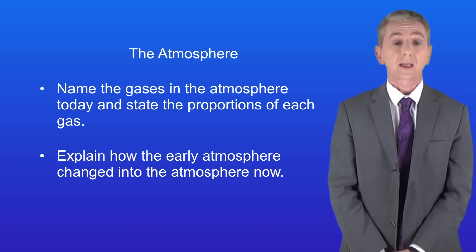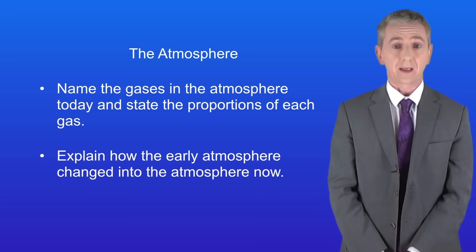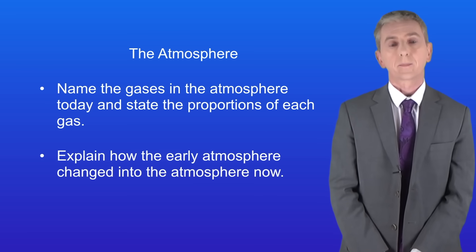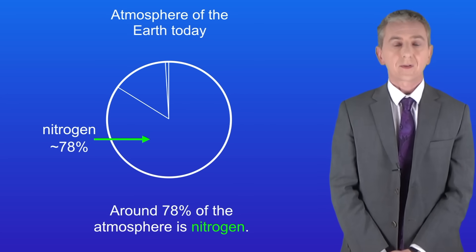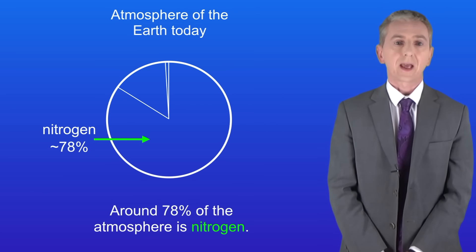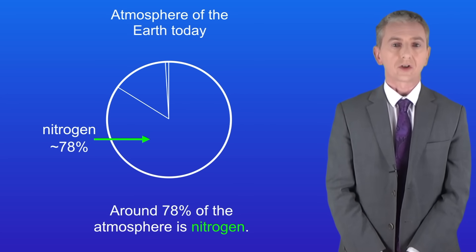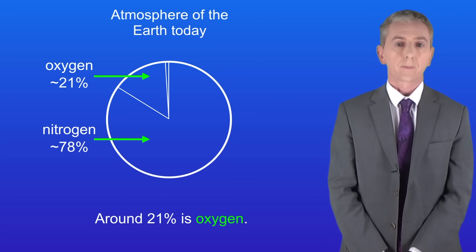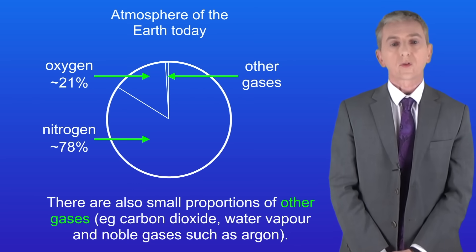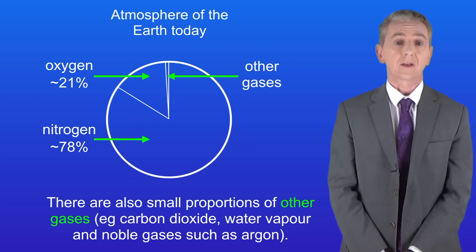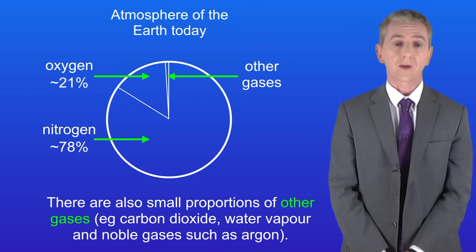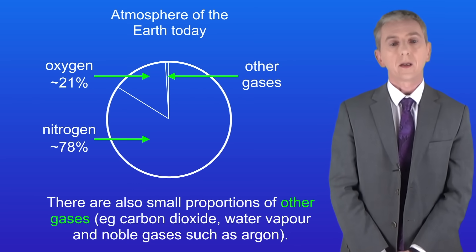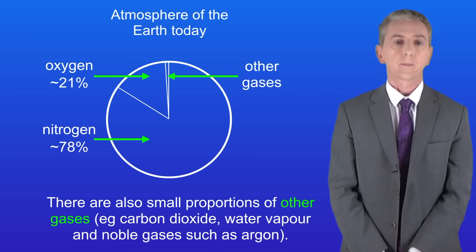We're going to start by looking at the gases present in the atmosphere today, and you do need to learn these. Around 78% of the atmosphere is nitrogen and around 21% is oxygen. There are also small proportions of other gases such as carbon dioxide, water vapor, and noble gases such as argon.